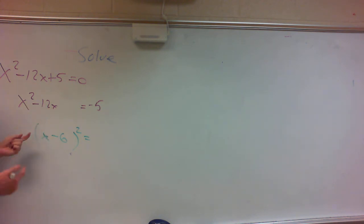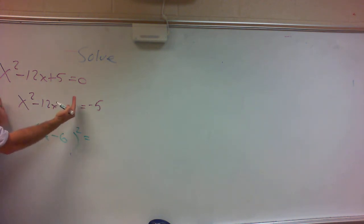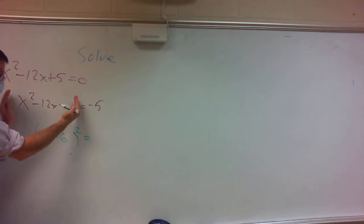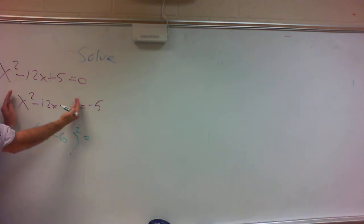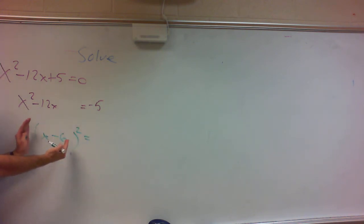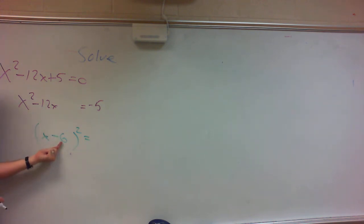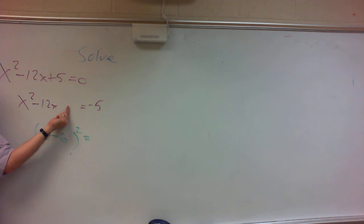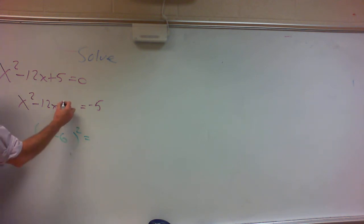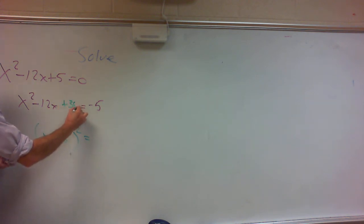When I say complete the square, I want this to be a perfect square. So right below it, take x and take half of 12 to get x minus 6. If this is x minus 6, what has to go in the last term? A plus 36.